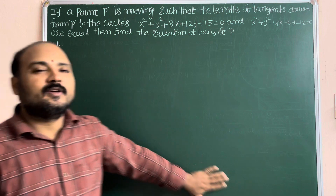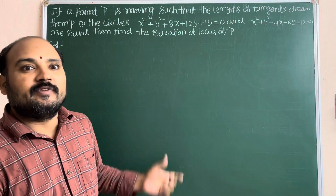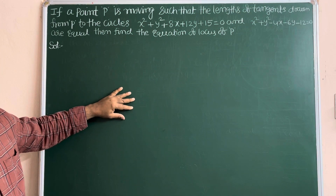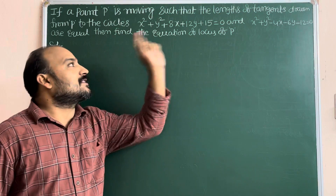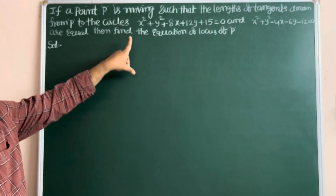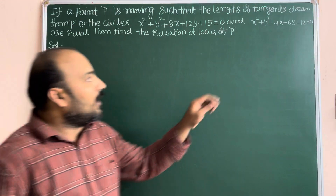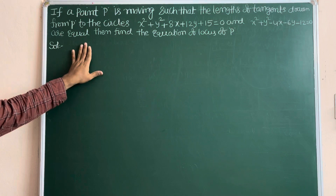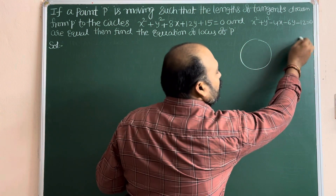Dear students, this problem belongs to circles, specifically the concept of length of tangent, which is in Exercise 1B. This is one of the four-mark possibilities in circles. The question: if a point P is moving such that the lengths of tangents drawn from P to the circles x² + y² + 8x + 12y + 15 = 0 and x² + y² - 4x - 6y - 12 = 0 are equal, then find the equation of the locus of P. These are the two given circles.